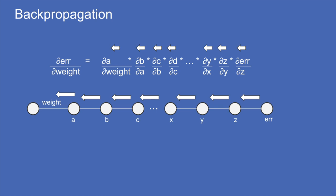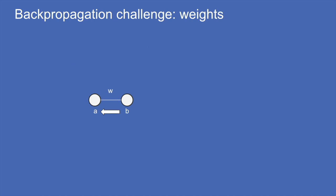This is computationally many many times cheaper than recalculating the error for the whole neural network for every weight. In the neural network we've created there are several types of back propagation. For a weighted connection between two neurons A and B: assuming we know dE/dB and want to know dE/dA, we write the relationship B = W·A, take the derivative dB/dA, and get the weight W — that's how we make that back propagation step.